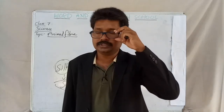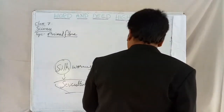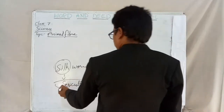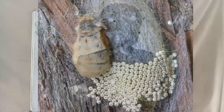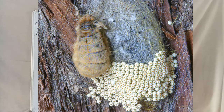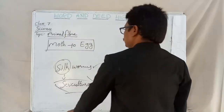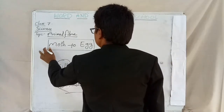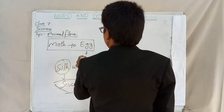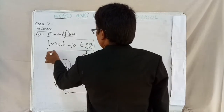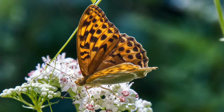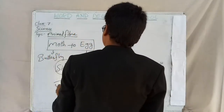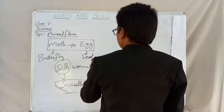The first stage of sericulture is moth to egg. Here, the moth is nothing but silk moth. Eggs are also called as seeds. The moth is like a butterfly.